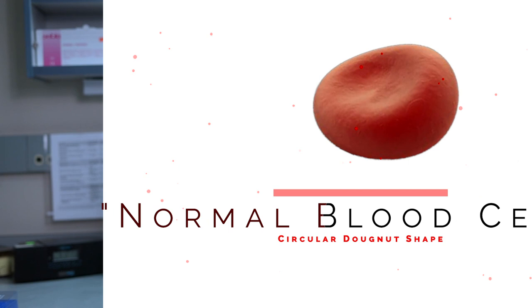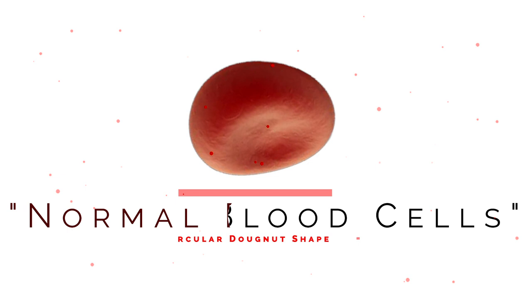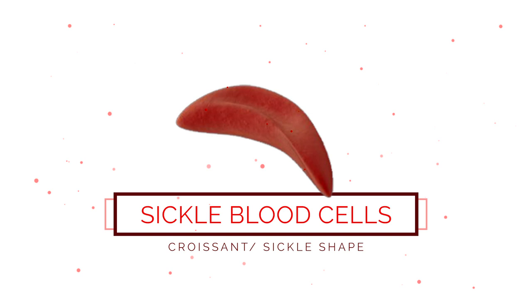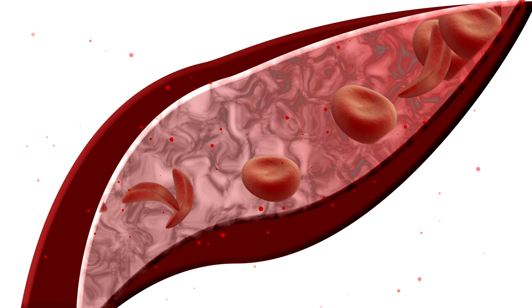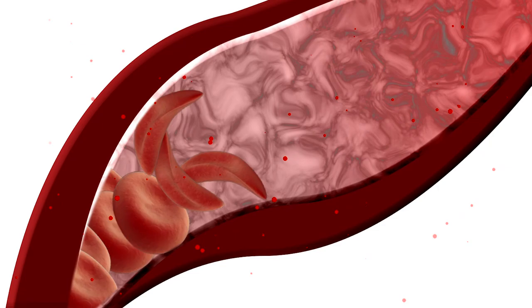With the sickle cell person, they'll have some normal red cells and then they'll have some that are defective with that gene. What happens is when they release that oxygen, the cell actually becomes a sickle shape. And because it's a sickle shape, it gets caught in different parts of the circulatory system and in the organs. It creates a situation where a person may become iron overloaded. They may have a lot of pain when they're in sickle crisis.